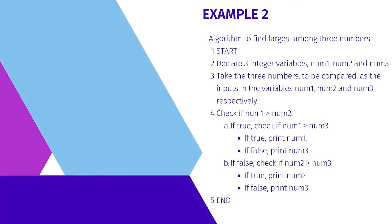Next, let's look at an algorithm to find the largest among three numbers. First, we start. We declare three integer variables num1, num2, and num3 and take three numbers as input. Then we check conditions: if num1 is greater than num2, we check if num1 is also greater than num3 — if true, we print num1, otherwise print num3. If num1 is not greater than num2, we check if num2 is greater than num3 — if true, print num2, otherwise print num3. That is the end of this algorithm.